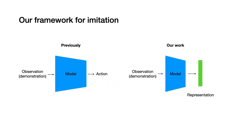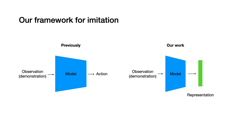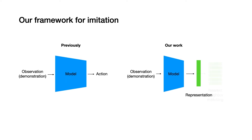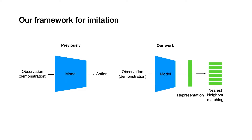First, we train a visual representation given the observations. We use self-supervised learning to do so. Next, we use nearest neighbor from our training data to our observation in the representation space to figure out the action.